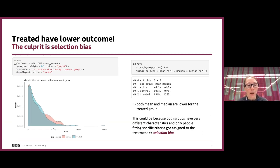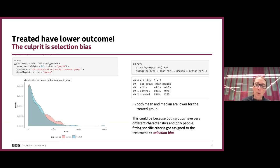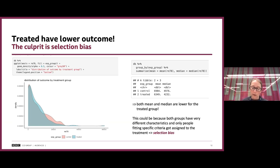What happens if we just compare the outcome between the treated and the control group? If you do that, you see that the control group — whether you look at the mean or the median — had a higher revenue in 1978 compared to the treated group. That's obviously not something you'd want to report: we don't want to say we've been wasting public money or that the training made people earn less. But as you've probably realised, there is a problem of selection bias: the people selected for the training programme had very specific characteristics.